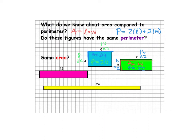It's interesting to see that between the two shapes, my area is the same but my perimeter is changing. Now let's look at the purple shape — we've got 2 times 12, so our area is 24 again. But for our perimeter, we do 12 times 2 and 2 times 2: that's 24 and 4, so 4 plus 24 gives us a perimeter of 28.